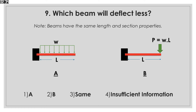Which beam will deflect less? We have two beams with the same length and section properties. Beam A is loaded with a uniform load of W throughout the length, but beam B is loaded with a concentrated load of W times the beam length. Both beams have the same total load; however, beam B will have more deflection since the entire load is concentrated at the end, furthest from the support.